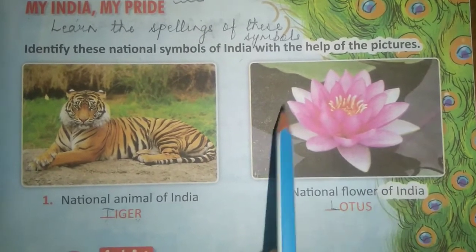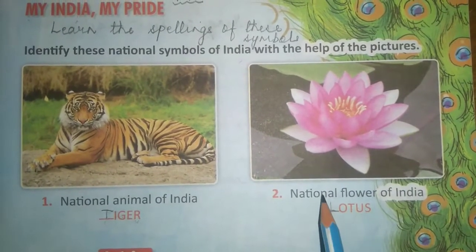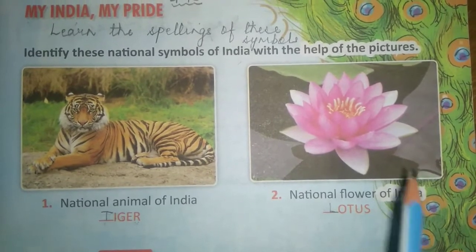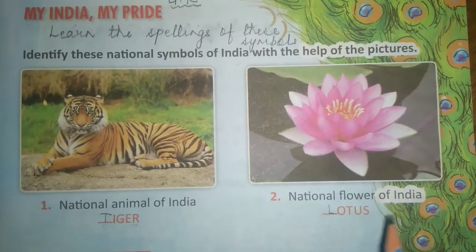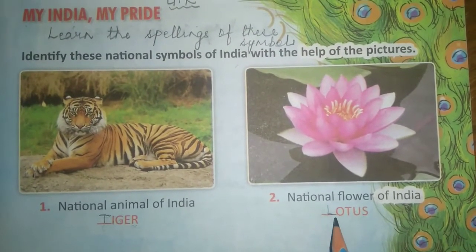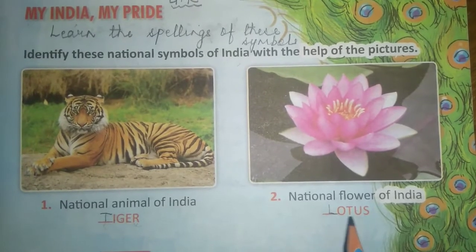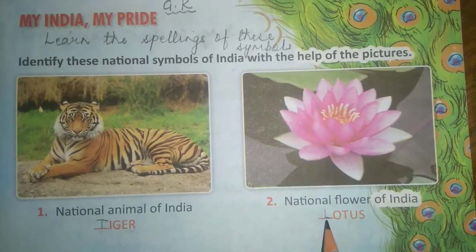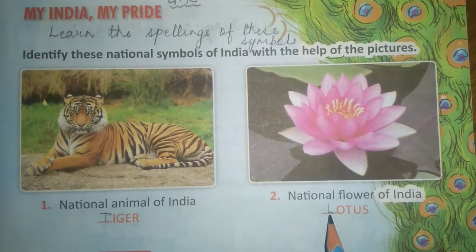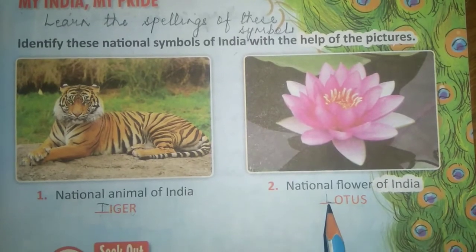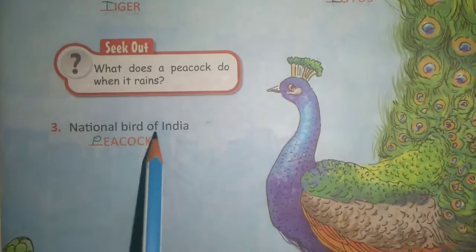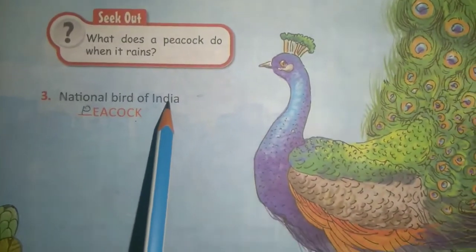The second picture is the picture of a flower. National flower of India — this is our national flower. It is lotus. L-O-T-U-S. You have to write down capital L.